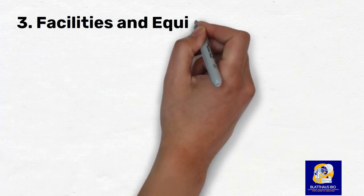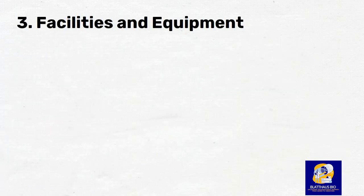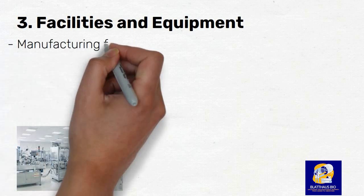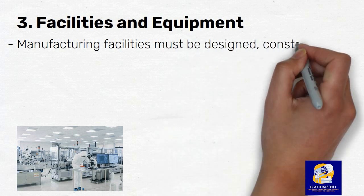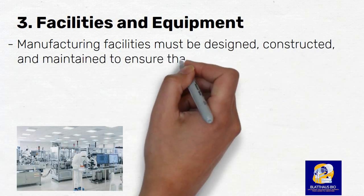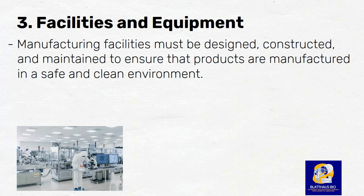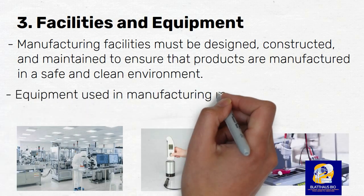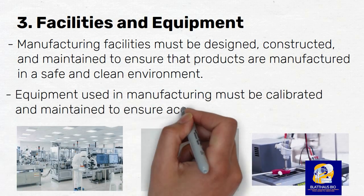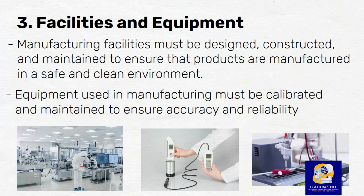Number 3: Facilities and Equipment. The third principle of GMP is the maintenance and calibration of facilities and equipment. Manufacturing facilities must be designed, constructed, and maintained to ensure that products are manufactured in a safe and clean environment. Equipment used in manufacturing must be calibrated and maintained to ensure accuracy and reliability. Examples of facilities and equipment include clean rooms, air handling systems, and manufacturing equipment.